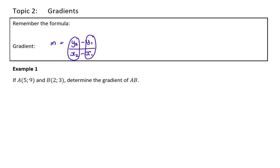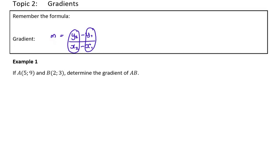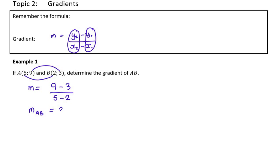Let's start off with some easy examples and work our way towards more difficult. Example 1 says if A and B are two points, determine the gradient of AB. This formula is given to you on the formula sheet. You don't actually have to show the formula — you can go straight to substitution: 9 take away 3 over 5 take away 2. You don't have to show any more working; you can just say the answer is 2.